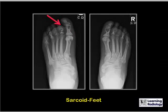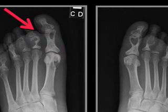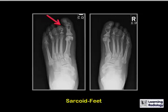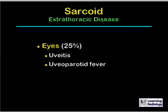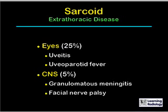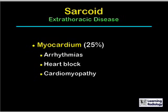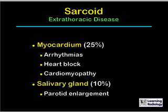This is an example of sarcoid of both feet, with multiple small lytic densities and a somewhat characteristic heart-shaped lytic lesion in the right great toe. Other extrathoracic disease includes involvement of the eyes with uveitis and uveoparotid fever, the central nervous system with granulomatous meningitis and facial nerve palsy, the myocardium producing arrhythmias, heart block, and sometimes cardiomyopathy, and the salivary glands with parotid enlargement.